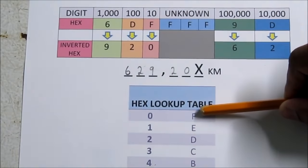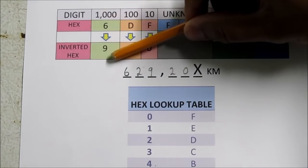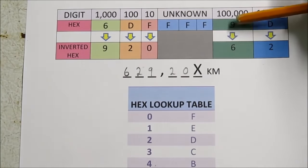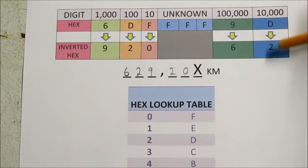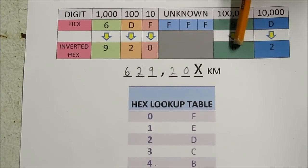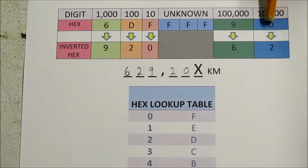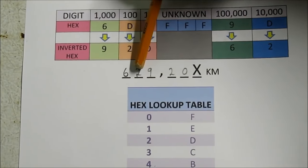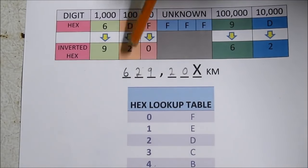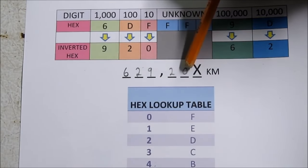So in this example here, if we take 6 and invert it we get 9. We get D to 2, F to 0, 6 to 9, D to 2. And then to translate this, the hundred thousands column which has a 6 goes here. The ten thousands column has a 2, that goes here. The thousands column has a 9, that goes here. The hundreds column has a 2, that goes here. And the tens column has a 0.